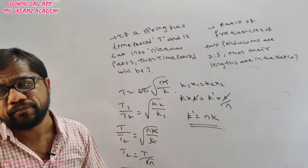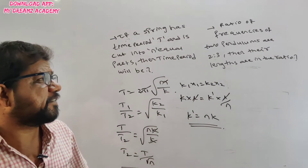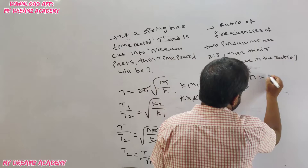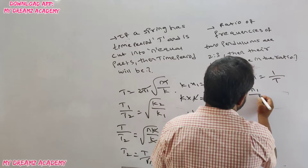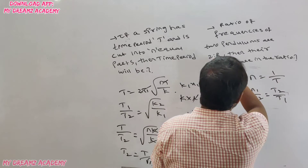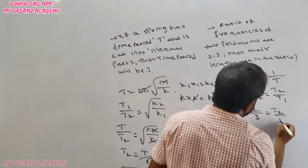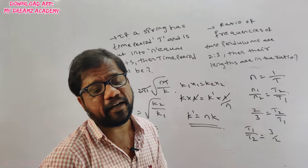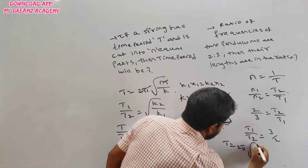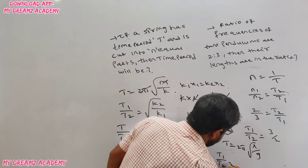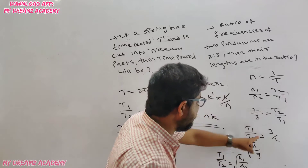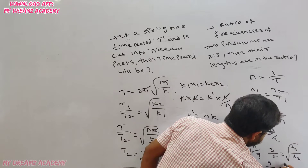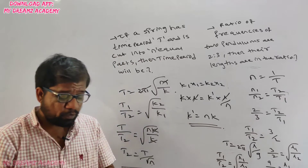Question: The ratio of frequencies of two pendulums is 2:3. Find the ratio of their lengths. Frequency n = 1/T, so n₁/n₂ = T₂/T₁. Given n₁/n₂ = 2/3, this means T₂/T₁ = 2/3, so T₁/T₂ = 3/2. The basic relation is T = 2π√(l/g), so T₁/T₂ = √(l₁/l₂). Therefore 3/2 = √(l₁/l₂). Squaring both sides: 9/4 = l₁/l₂, so the ratio of lengths is 9:4.